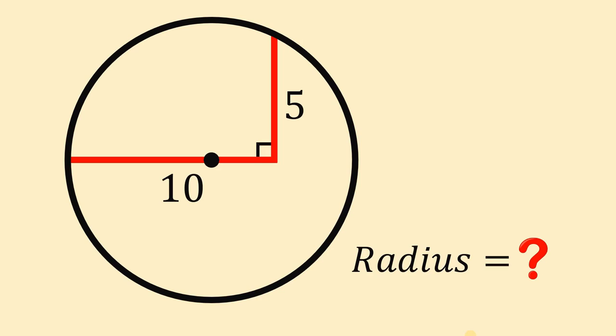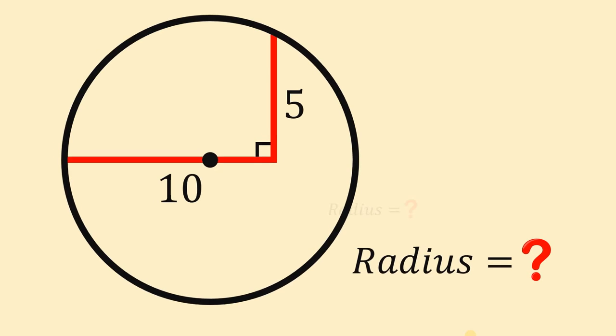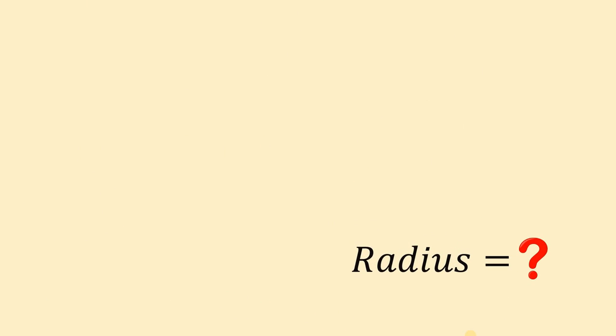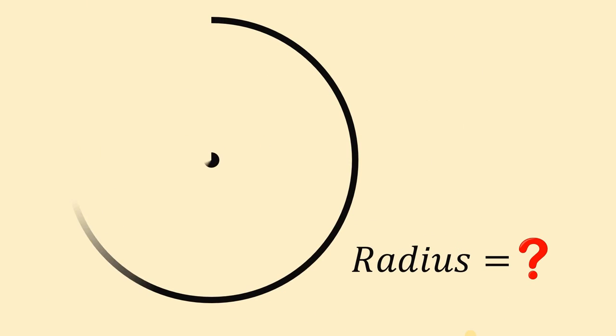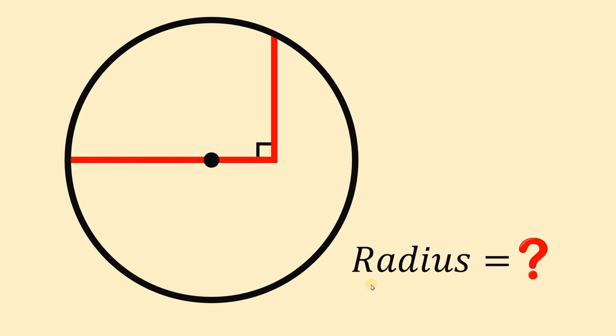For today's video, we will answer a geometry challenge suggested by one of our followers. Given a circle and 2 perpendicular segments that measure 10 units and 5 units, our goal is to solve for the radius of this circle.